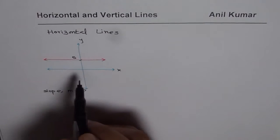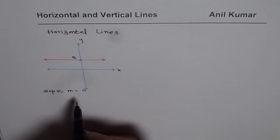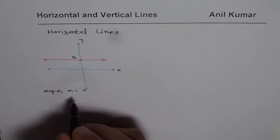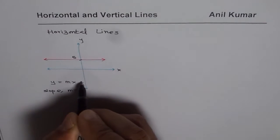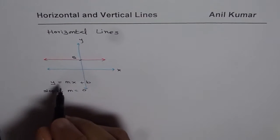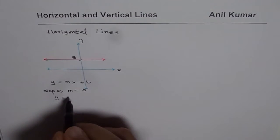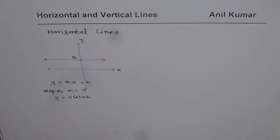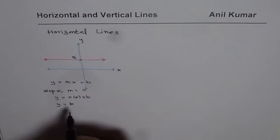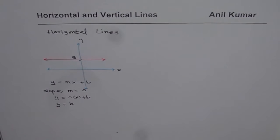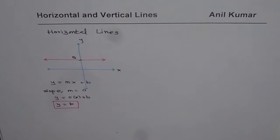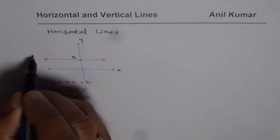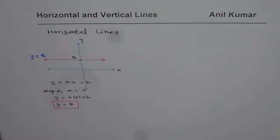Now, for this particular line, if the slope is 0, then the equation of the line in slope-intercept form could be written as y equals to mx plus b. Now, if m is 0, then we can write this equation as y equals to 0 times x plus b. So that means y equals to b is the general equation of any horizontal line — y equals to y-intercept. Since we have a y-intercept of 5 for this line, y equals to 5 is the equation of this particular line.